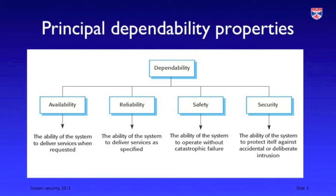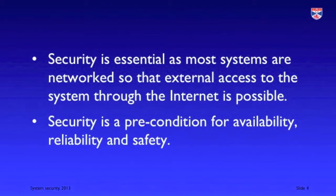Security is one of the four dependability properties that I've discussed in other videos: availability, reliability, safety, and security. Security is in some ways the most central of these properties as it interacts with all of the other properties. Security is essential nowadays as virtually all systems are networked, connected to the internet and hence potentially accessible from anywhere in the world.